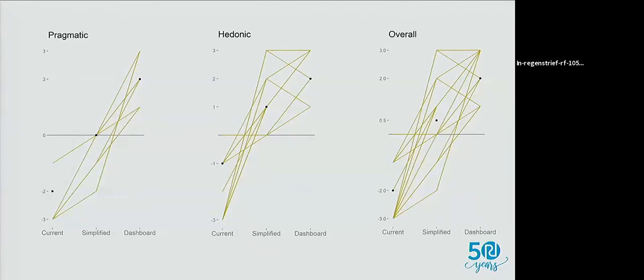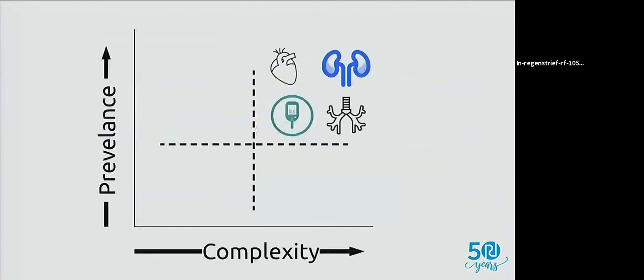For the next version we plan to implement the qualitative changes recommended, but also want to address a few specific disease states to narrow our focus. We want to target diseases with the highest prevalence and highest complexity — things like heart disease, diabetes, kidney disease, and pulmonary disease. We opened this up to the group to ask whether these are good starting points or whether other disease processes should be considered.